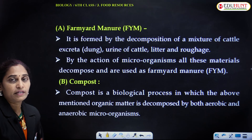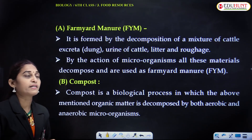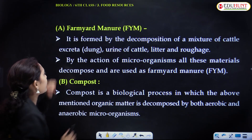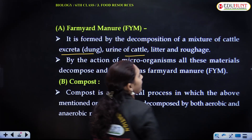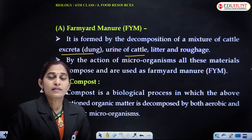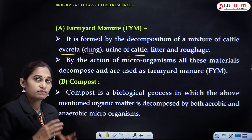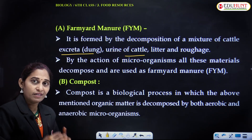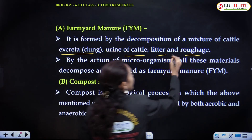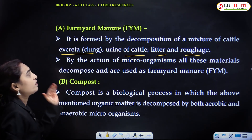Farmyard manure is formed by the decomposition of a mixture of excreta — that is dung and urine of cattle — litter, and roughage. After decomposition, this material is used as manure. All these things, after decomposition, become a good fertilizer. This is called farmyard manure.